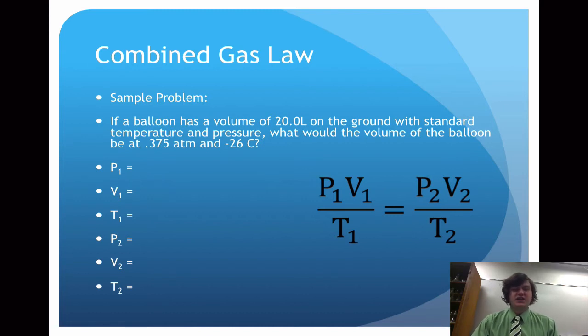We see from the question that it says standard pressure, and so we have three options. We can either choose atmospheres, kilopascals, or millimeters of mercury. I've chosen atmospheres because the pressure, or P2, after the change happens, is in atmospheres, and this will save us a conversion later on. So the initial pressure is standard pressure, and it's 1.0 atmospheres.